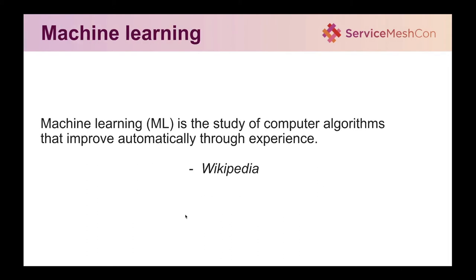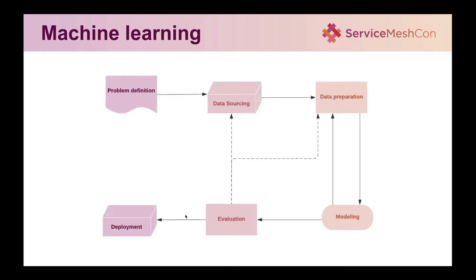Before we jump into where we are at Splunk, let's start off by going over a simple definition of machine learning. It's the study of computer algorithms that learn through experience. What it really translates into is: we start by defining a problem, then source some data, massage this data a bit, and run some algorithms on it — that's the modeling part. Once we get the model, we do some evaluations. We might go back, rework the data, and retrain the model. Once we are satisfied, we deploy it to production where it can do really smart things with data it has not seen before.